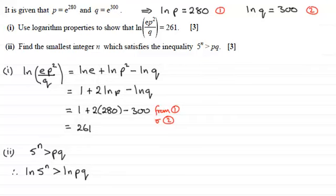And what I can do next, if we come down here, is use the power rule for logs. It doesn't matter whether it's natural logs or logs. We can bring the n out the front. We'll go up here, I think, plenty of room. So we'll have n times the natural log of 5 is greater than, in this case we'll use the multiplication rule, which is the same as the natural log of p plus the natural log of q.